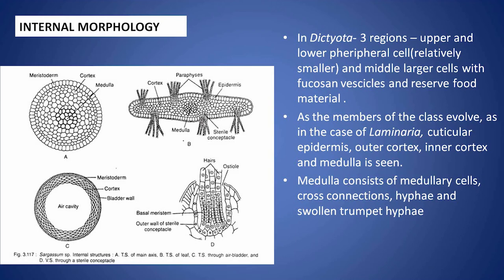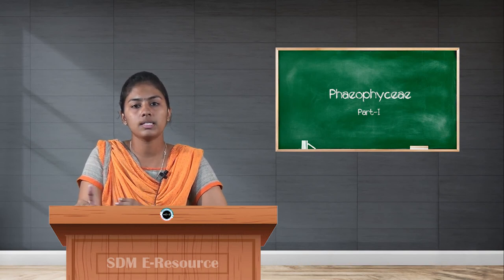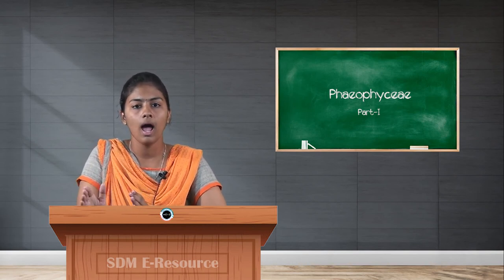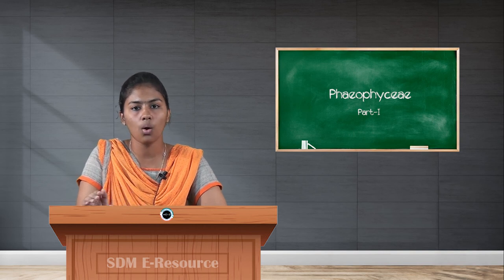The outer epidermal region is mainly meristematic in nature and is cuticular to protect it from the water. This outer epidermis is a little bit columnar and is convex on the outer side.